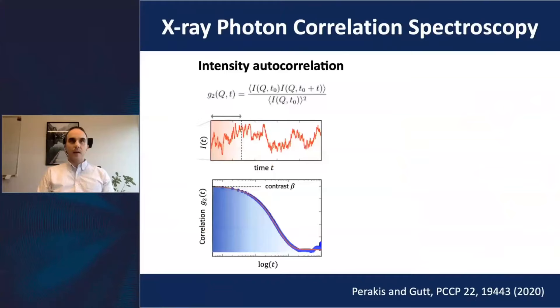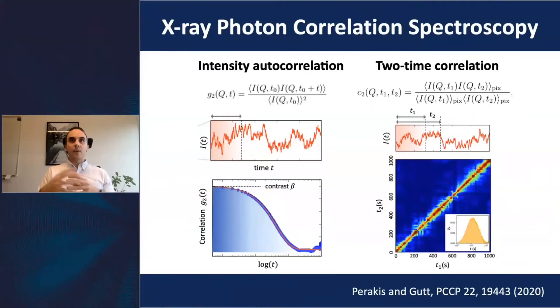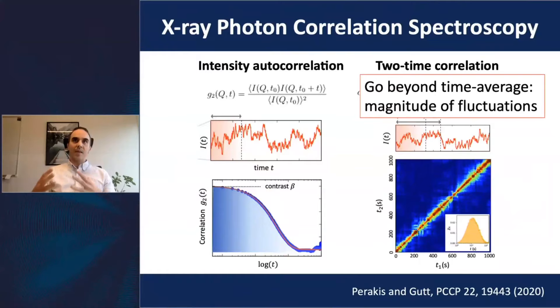By analyzing these fluctuations as a function of time, you can get information about their time scale, as we heard this morning. By going to higher-order correlations, you can get information about their magnitude — not just the characteristic time, but going beyond the time average to get information about the magnitude of the fluctuations. That's the theme of this expression of interest.